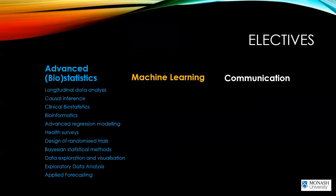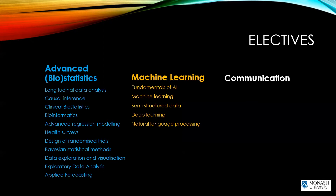There are elective choices in various areas of advanced statistics or advanced biostatistics, as well as elective choices in machine learning, including natural language processing — which is analysis of text-based data rather than numbers — and deep learning, which can be used in areas like image processing, such as machine learning algorithms for reading X-rays. There's also elective options focusing on communication skills for developing visual displays for large data sets.